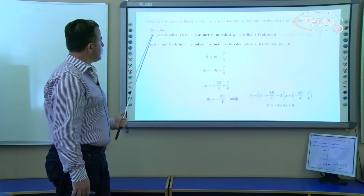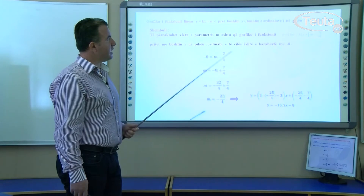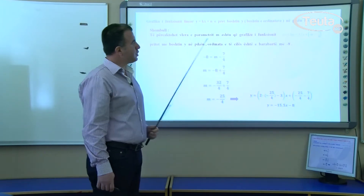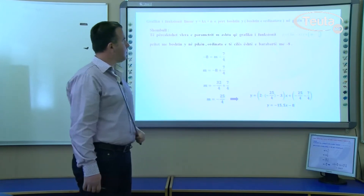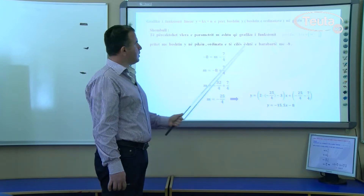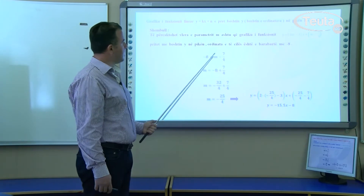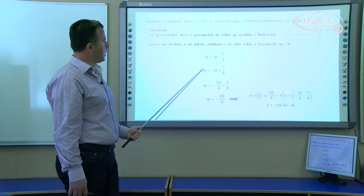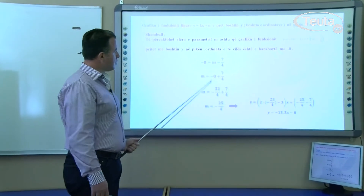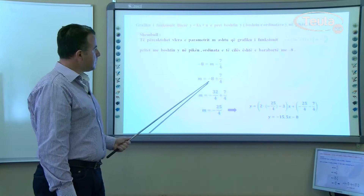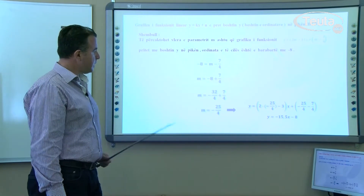Shohim një shembull që thotë: të përcaktohet vlera e parametrit m, ashtu që grafiku i funksionit y = (2m - 3)·x + (m - 7)/4 të pritet me boshtin y në pikën ordinata e së cilës është e barabart me -8. Kjo do të thotë y = -8. Atëherë kemi: -8 = (m - 7)/4; pra m - 7 = -32; m = -32/4 + 7/4; SHMVP është 4; minus 32/4 plus 28/4; parametri m = -25/4.